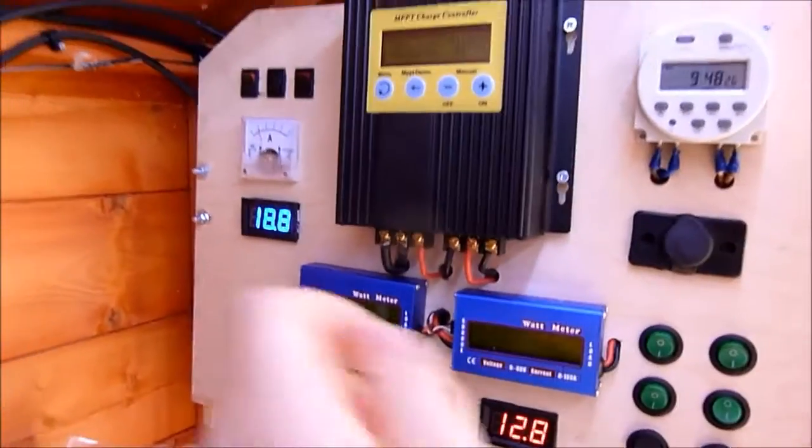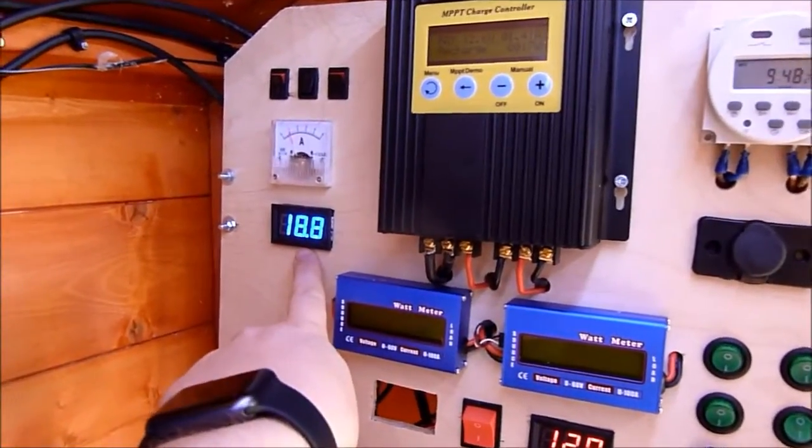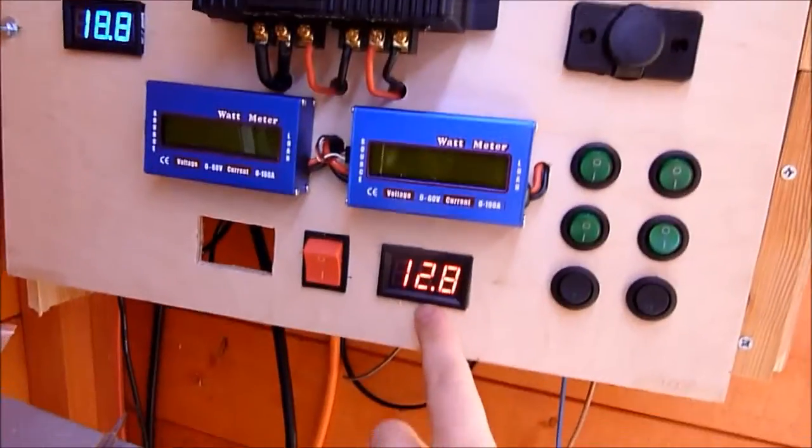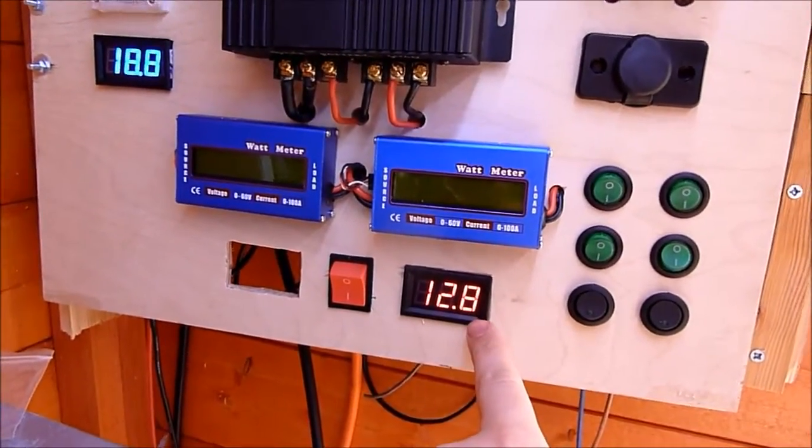As you can see, over here we've got the solar panel voltage, so that's running at just under 19 volts. And then we've got my battery voltage here.